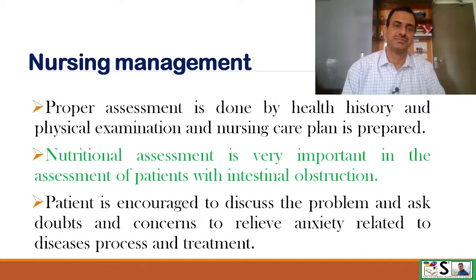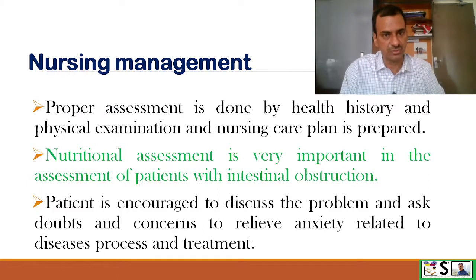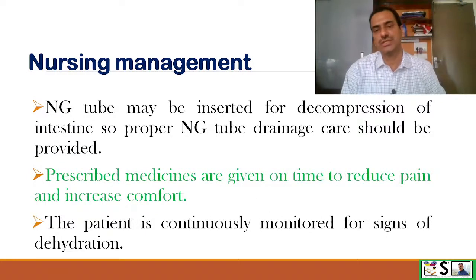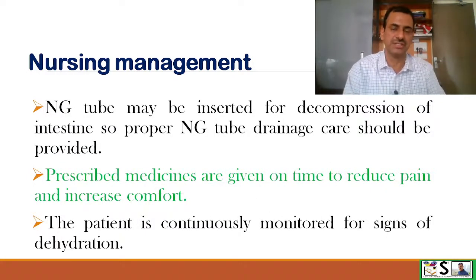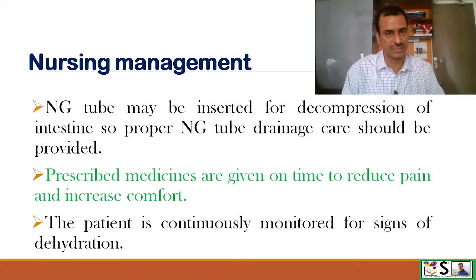Nursing management: Proper assessment is done by health history and physical examination, and a nursing care plan is prepared. Nutritional assessment is very important. The patient is encouraged to discuss problems and ask questions to relieve anxiety related to the disease process and treatment. A nasogastric tube may be inserted for decompression, and proper nasogastric drainage care should be provided. Prescribed medications should be given on time to reduce pain and increase comfort.